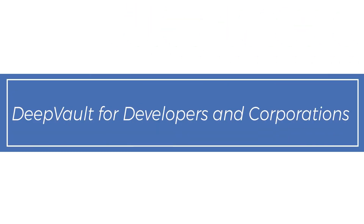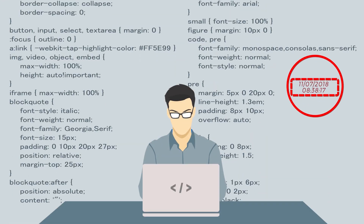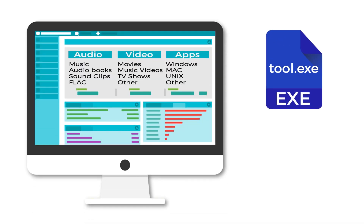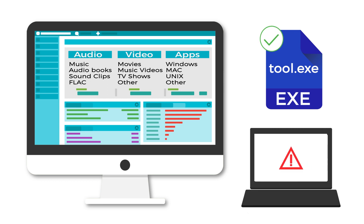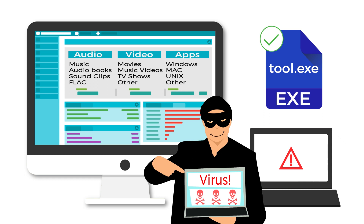DeepVault for developers and corporations. Timestamping your code within the DeepOnion blockchain ensures that you can prove that you created it. In a highly counterfeited environment, it might be your only way to prove its authenticity and ownership. Register your code now and timestamp your file. For example, a download site can protect their files with DeepVault and guarantee the files are original with no risk of viruses from someone who may try to insert harmful code. Anyone who downloads these files can check on DeepVault who created the file and the hash used.